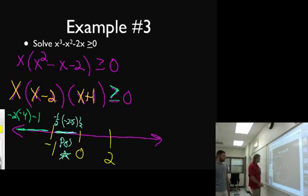And then let's pick a value in between zero and two. One sounds good. So we've got one times one minus two is negative one times one plus one is two. So a positive times a negative times a positive is a negative. So we don't care about that because we only want bigger than or equal to zero.